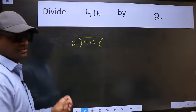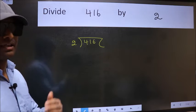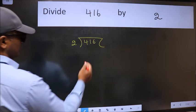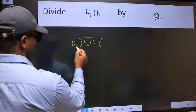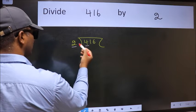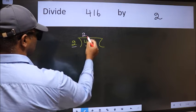This is your step 1. Next, here we have 4 and here 2. When do we get 4 in 2 table? 2 2s, 4.